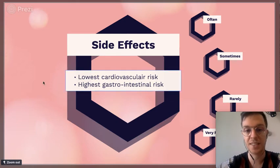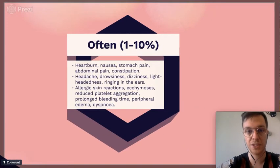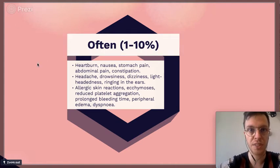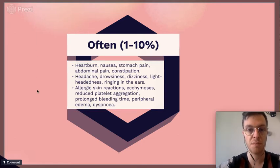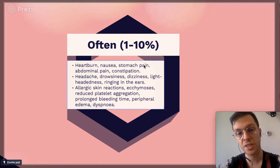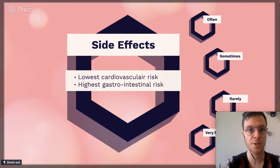Regarding side effects: Naproxen is the NSAID with the lowest cardiovascular risk but the highest gastrointestinal risk — take that into consideration. Common side effects (1–10% of cases) include heartburn, nausea, stomach pain, abdominal pain, constipation, headaches, and allergic reactions.